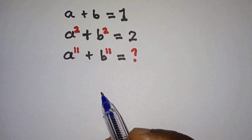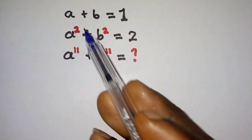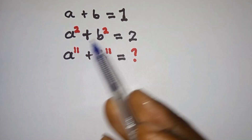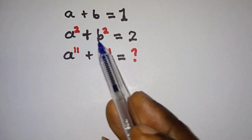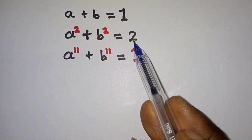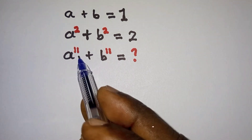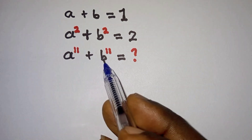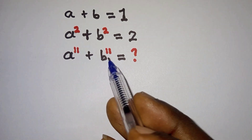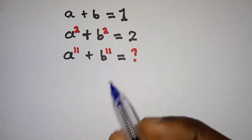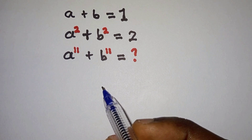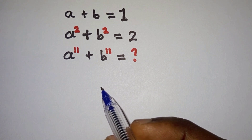Hello everyone. In this video we're going to be solving this interesting problem. We are given a plus b is equal to 1, a squared plus b squared is equal to 2, and we are to find the value of a to the power 11 plus b to the power 11. Before we start, if you're new here, please subscribe to my channel. Now let's get started.